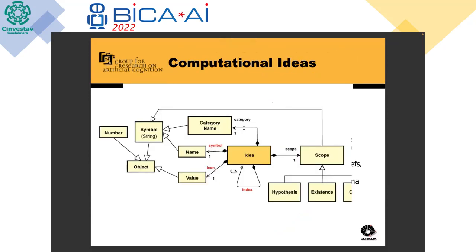How can we conceive these computational ideas inside a computer program? A computational idea is basically a conjunction of a value, which can be a number or a symbol. The idea must have a name, a category name, and a scope. The scope corresponds to whether we are talking about the world of hypothesis, the world of existence, or the world of categories.